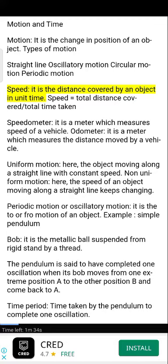Speed, it is the distance covered by an object in unit time. Speed equals total distance covered divided by total time taken.